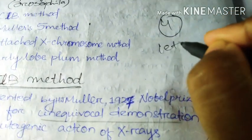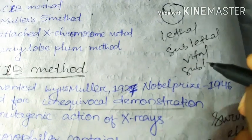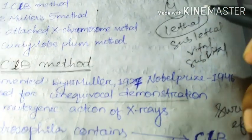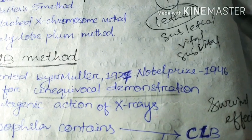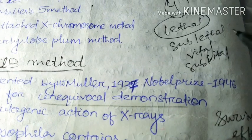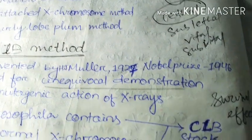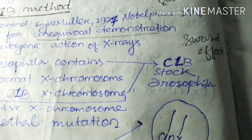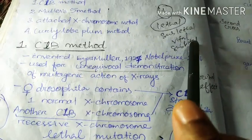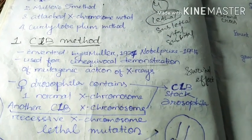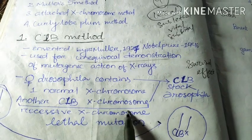On the basis of survival effect, the lethal mutation is of four types: lethal, sub-lethal, vital, and sub-vital. Lethal mutation is where the rate of chances of survival is zero percent — there are no survival chances. The lethal mutation kills the individual that carries the lethal gene. He identified this lethal mutation in the X chromosome, where survival is completely zero, with no chances of survival.